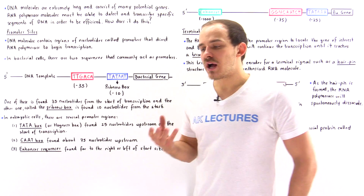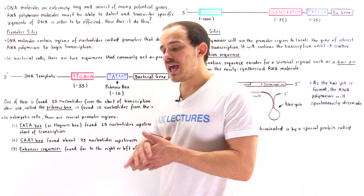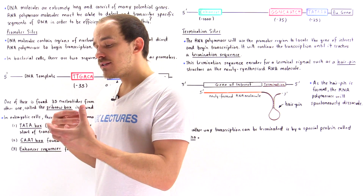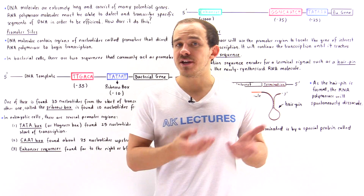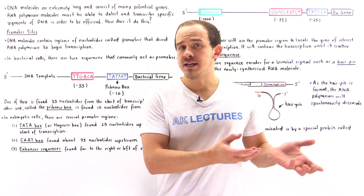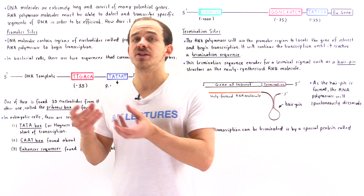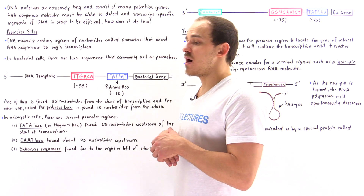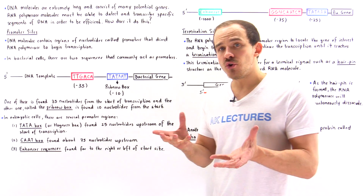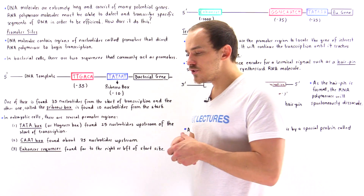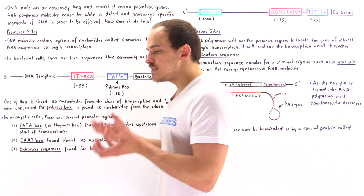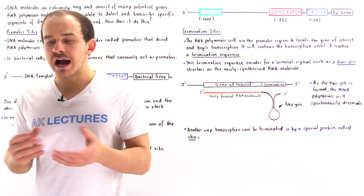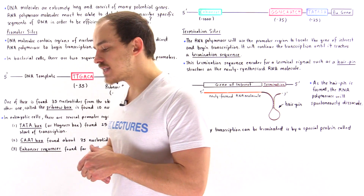This process is called transcription. In transcription, we copy the genetic information found in DNA onto an RNA molecule, and then that RNA molecule is used in a variety of ways to synthesize the proteins needed for the survival of the cell.